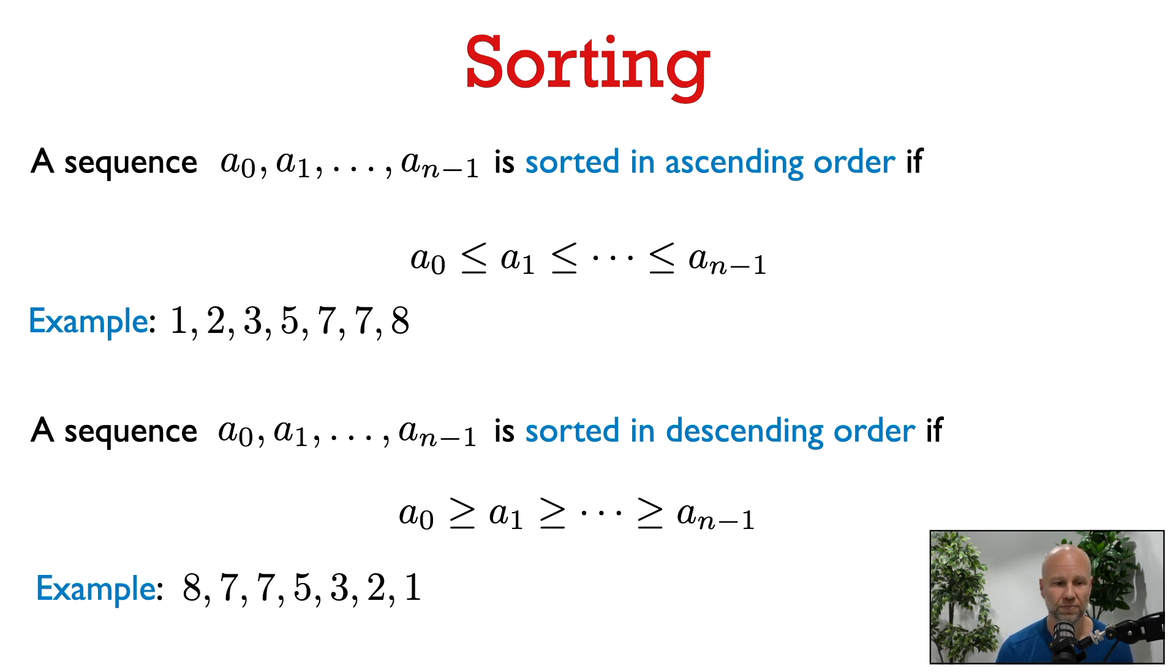Let's start off with the definition. A sequence a0, a1, up to an-1 is sorted in ascending order if a0 is at most a1, which is at most a2, etc., all the way up to an-1. So an example of a sequence sorted in ascending order would be 1, 2, 3, 5, 7, 7, 8.